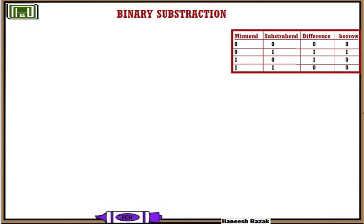0 minus 1: difference is 1, borrow is 1. We have 1 borrow because 0 minus 1 gives a negative result, so we borrow. Then 1 minus 0: difference is 1, there is no borrow, because 1 minus 0 is 1. 0 minus 1 is negative, that is why we borrow here.